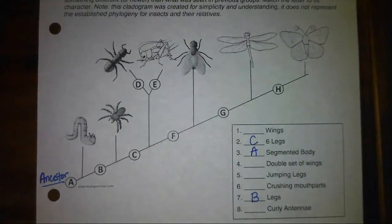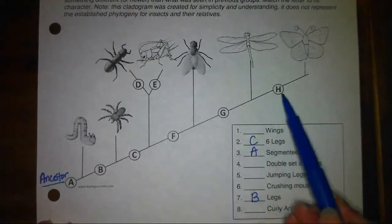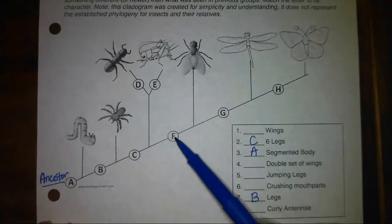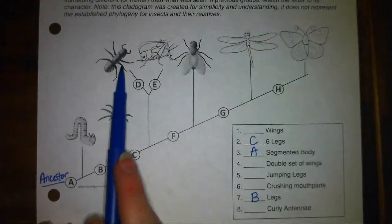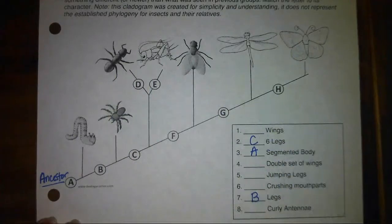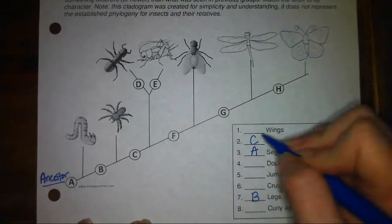I'm going to keep going up with the next three traits. I'm going to do F, G, and H, and then go back to the remaining two. So trait F — these two organisms would not have that trait; however, the three organisms in the cladogram that appear after trait F derived would have that trait. Hopefully you have already marked down that F should be wings.